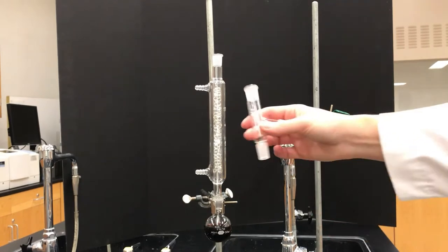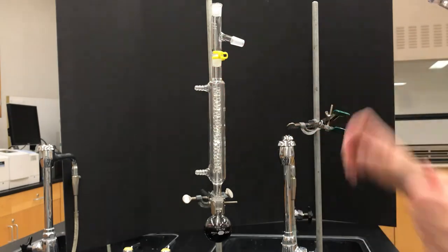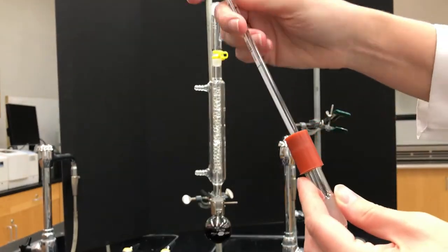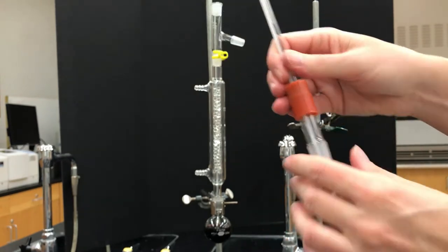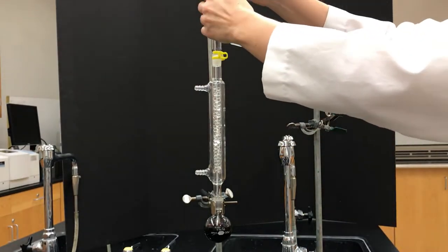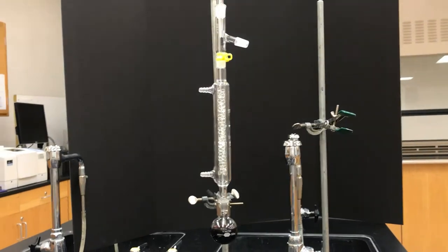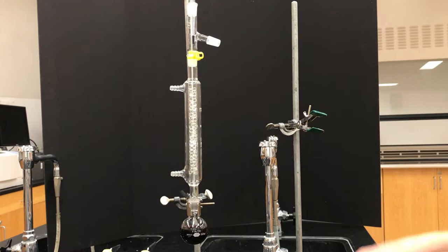And that's the fractional column. Now the rest is the same, so why don't we go fast again. Next goes the three-way adapter and here's our thermometer adapter. We push that in delicately and that goes up there. It just ends up being a really tall setup, that's the main thing. It's just really tall with that fractional column in it.